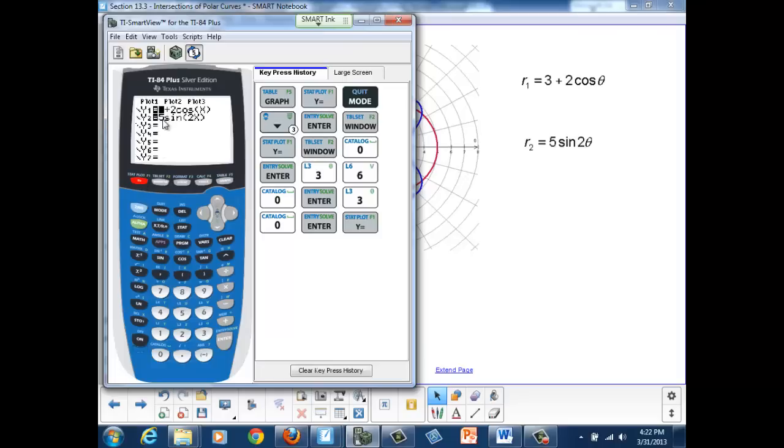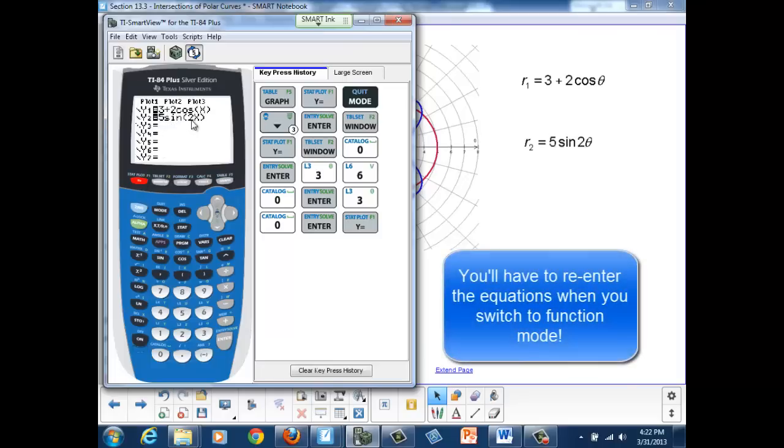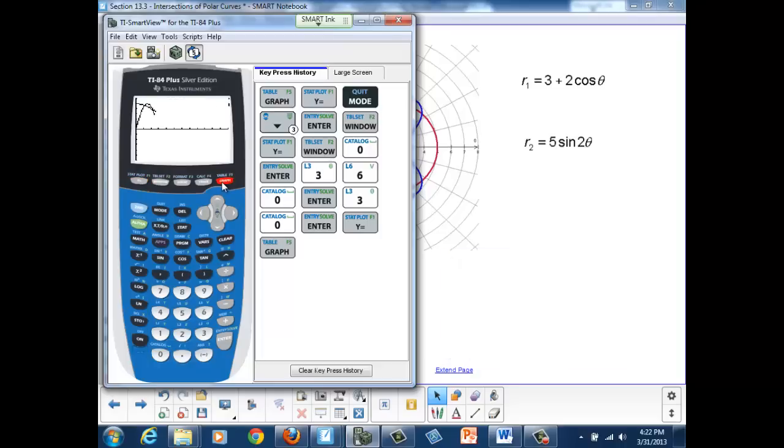When I plot these two graphs, 3 plus 2 cosine x and 5 sine 2x, I'll get these two graphs.